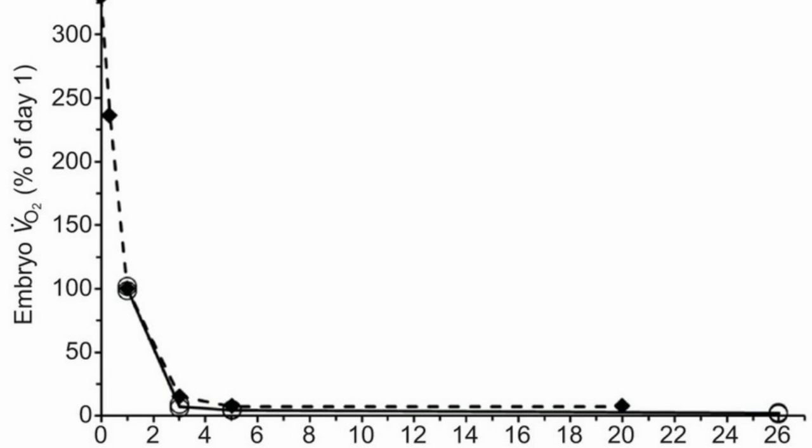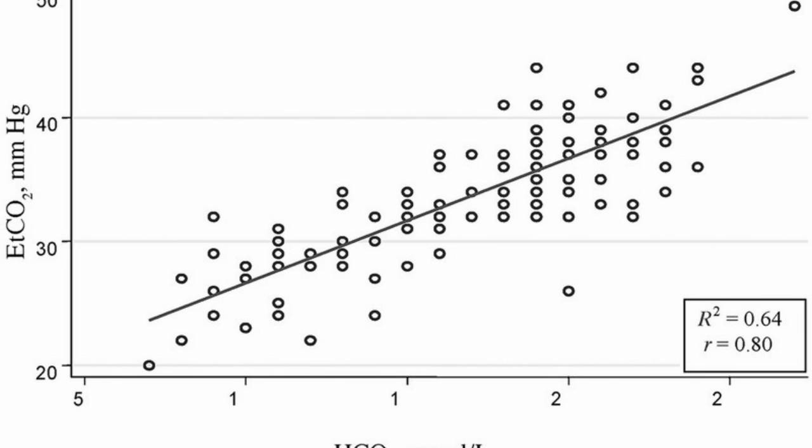Difference between metabolic and respiratory acidosis. Acidosis roughly means something with acidity. Both metabolic and respiratory acidosis are related with changes in acidity of the blood of animals, especially humans.